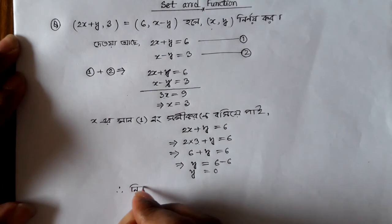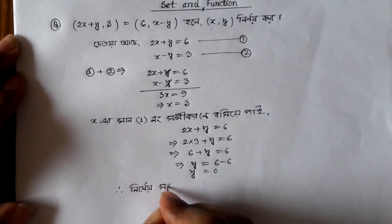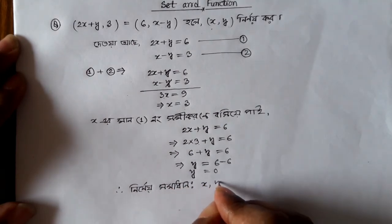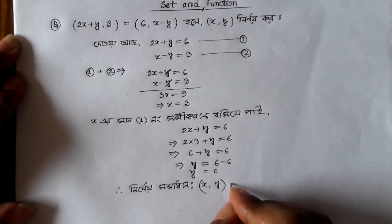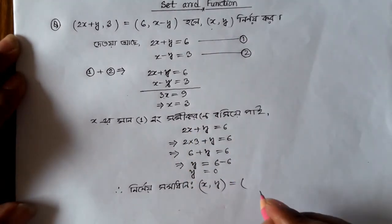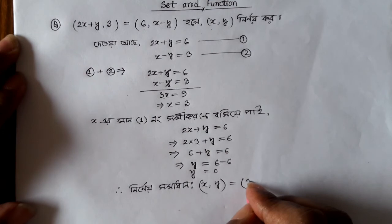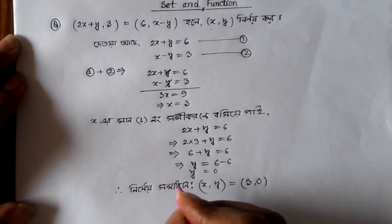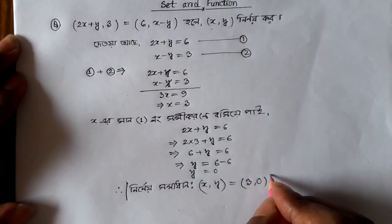So the final solution is (x, y) = (3, 0). When we verify this, y equals 0. This is the solution for this system of equations.